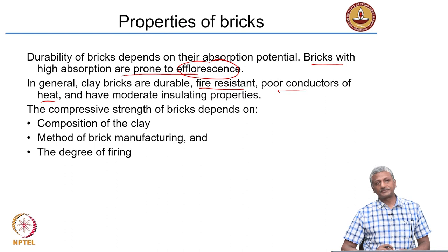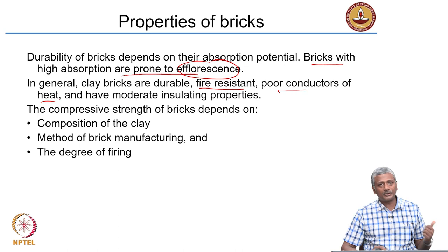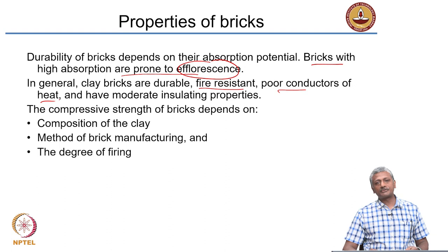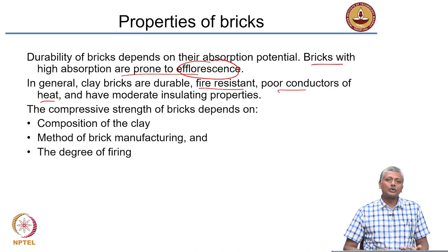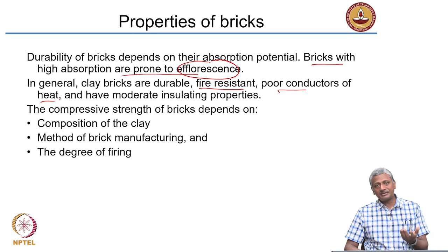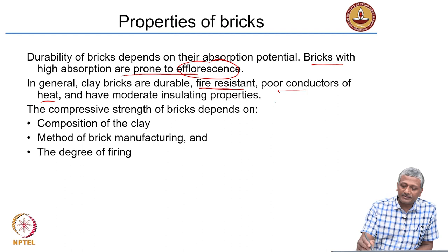With bricks, you have little choice in engineering material quality to a large extent, because it depends on the quality of soil available at that location. You cannot truck large quantities of soil from different locations just because it is good quality. So you look at additives to improve the existing soil quality — for instance, fly ash can improve the quality of the brick significantly, improving strength and lowering water absorption. Bricks are good insulators and poor conductors of heat, and also very good against fire.